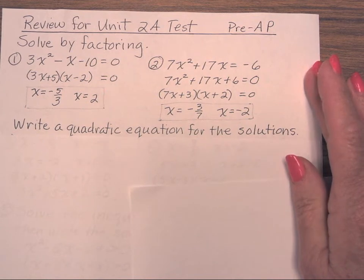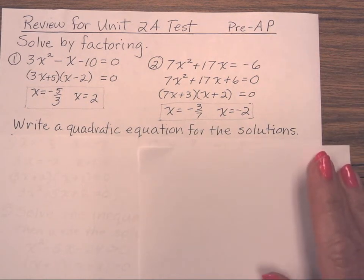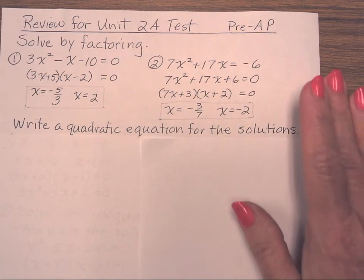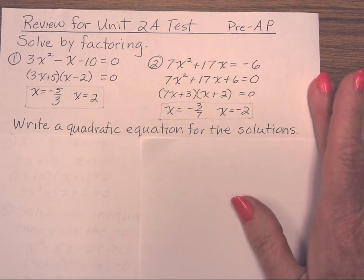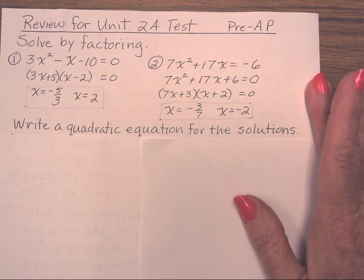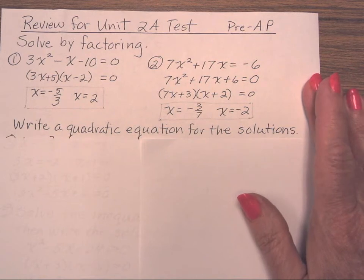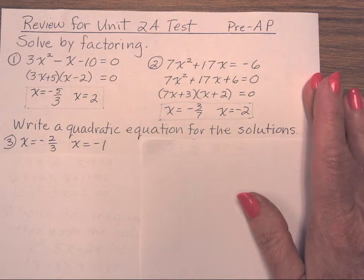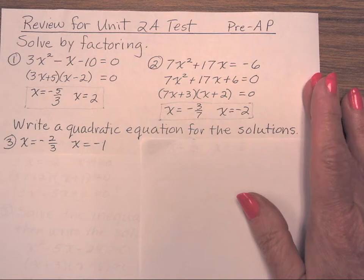Next, you're going to write a quadratic equation when given the solutions. Remember, equations have something on both sides of the equal sign — that's what makes it an equation. For number 3, I have x equals negative 2 thirds and x equals negative 1. If you're seeing one here with a fraction, what do you think the chances are that you're going to see one with a fraction on your test? Yep, really good chances.